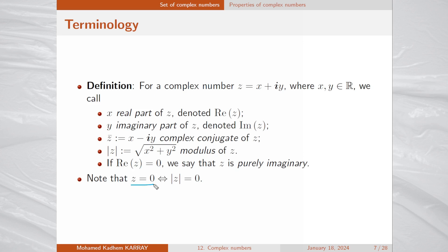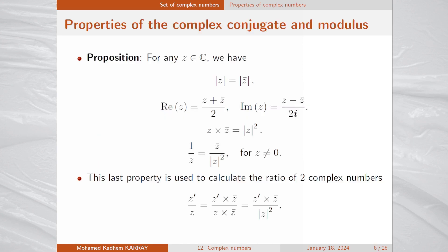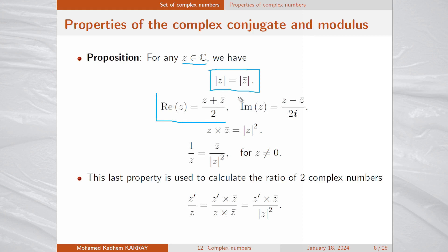z equals zero if and only if its modulus equals zero. Here are the basic properties of the complex conjugate and modulus. The modulus of z equals the modulus of its complex conjugate. The real part of z equals z plus z-bar divided by 2. The imaginary part of z equals z minus z-bar divided by 2i. Note that the real part uses addition and denominator 2, while the imaginary part uses subtraction and denominator 2i.